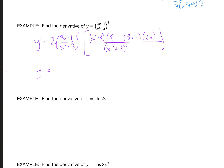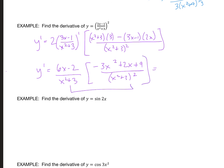Outside I've got (6x - 2) over (x² + 3), and inside the parentheses, distributing and combining like terms gives negative 3x² + 2x + 9, all over (x² + 3) squared. Putting it all together: (6x - 2) times (negative 3x² + 2x + 9) all over (x² + 3) to the third.